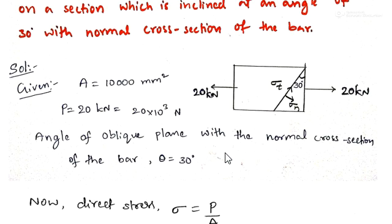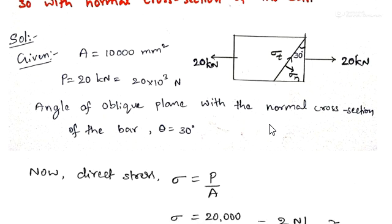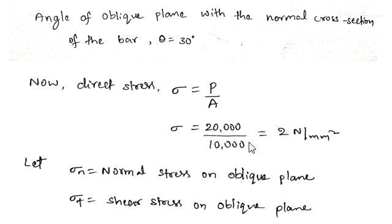We have to find out sigma n and sigma t on this oblique section. Before that, let us find out the direct stress. The direct stress is given by sigma equals load by area. Load is given as 20,000 newtons and area is 10,000 mm square. If you simplify, we are getting direct stress value sigma as 2 Newton per mm square.